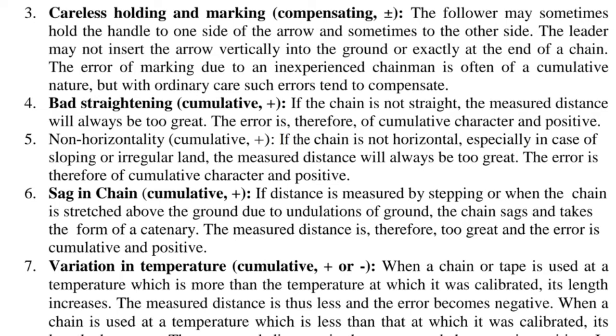5. Non-horizontality — cumulative, positive. If the chain is not horizontal, especially in the case of sloping or irregular land, the measured distance will always be too great. The error is therefore of cumulative character and positive.